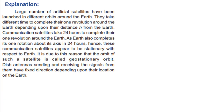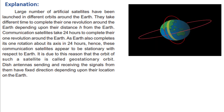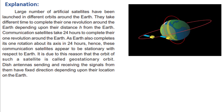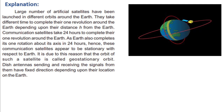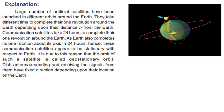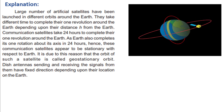A large number of artificial satellites have been launched in different orbits around the Earth. It is not necessary that all satellites move in one orbit — they move in different orbits. Some orbits are closer to Earth and some are farther. Because they move in different orbits, they take different times to complete one revolution around the Earth.